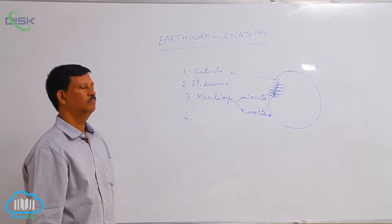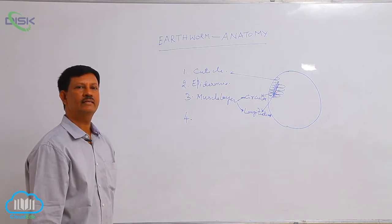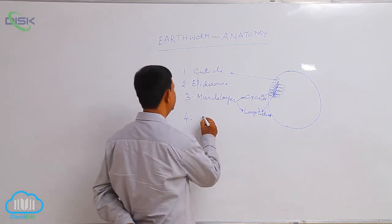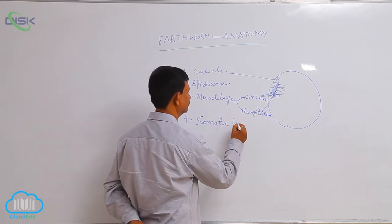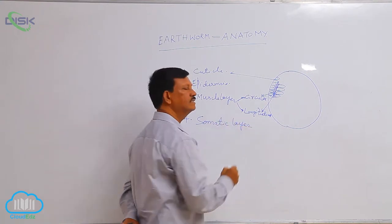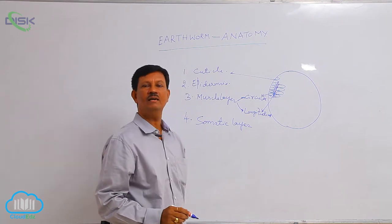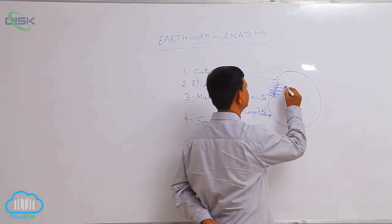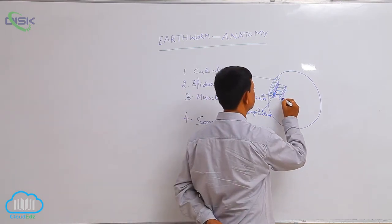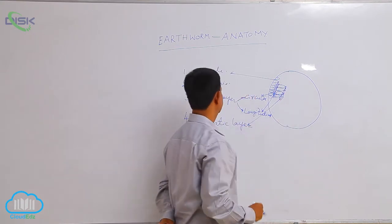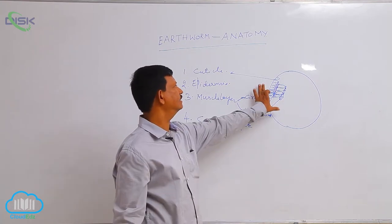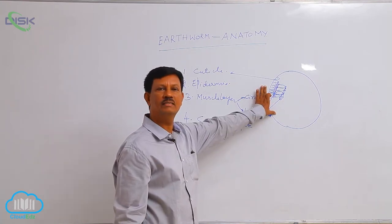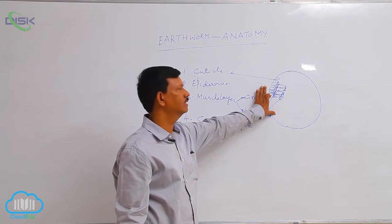Below the muscular layer, the somatic layer is present, which is derived from the mesoderm. This is the somatic layer. These are the layers present in the body wall of the earthworm.